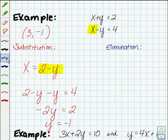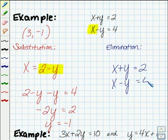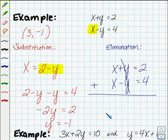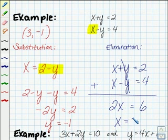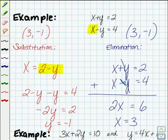Now using the method of elimination, I want to write my equations out so that everything is lined up neatly. This one is nice for elimination because if I add the equations just as they are, the y's will be eliminated. If I add the x's, I get 2x equals 2 plus 4, which is 6, and we can see that x is 3. When I substitute x equals 3 into either of these equations, I'll find my value of y. No matter which method you use, we'll arrive at the same answer.